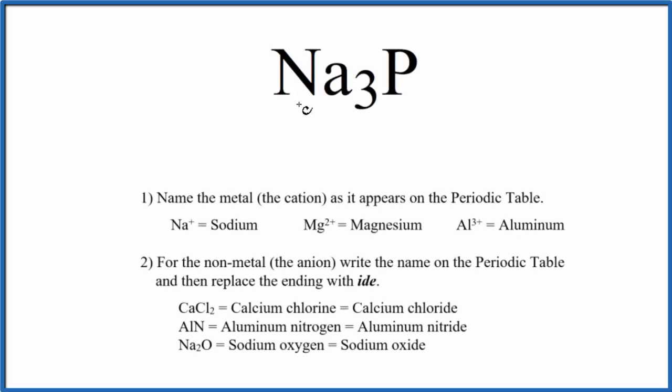To write the name for Na3P, we first need to recognize that this is an ionic compound. We have a metal and a non-metal, so that's going to be ionic.